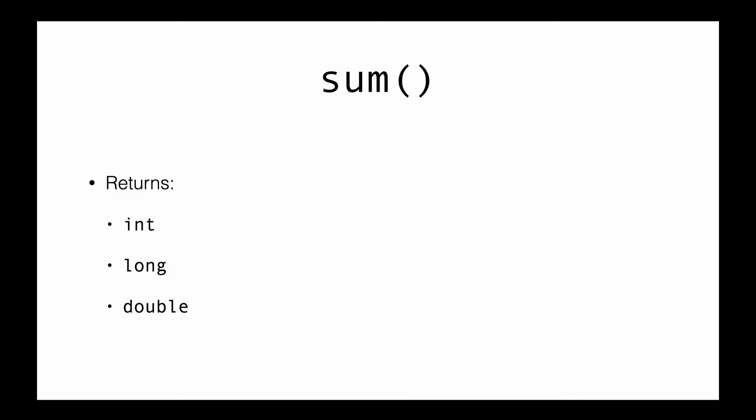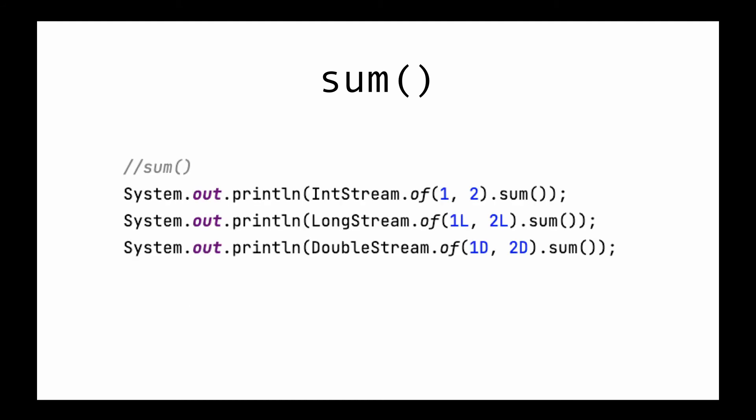The next method is sum. As the name suggests, sum adds up all the numbers in the stream. The IntStream returns a primitive int, the LongStream returns a primitive long, and the DoubleStream returns a primitive double. Notice that they are not Optional — they are simple, normal primitive types. Here is an example: we call the sum method on IntStream, LongStream, and DoubleStream and simply print the result, which just adds the two numbers.